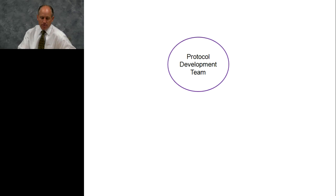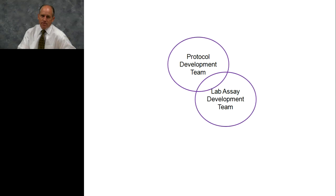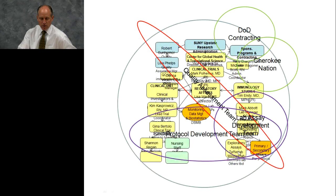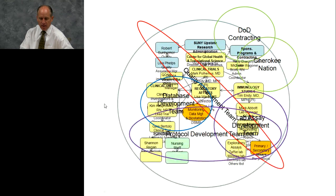Then we started our protocol development team — a team that had our industry sponsor, a group from the DOD, and multiple groups within the upstate family, crossing multiple layers. Then we took a subset of the protocol development team and developed a lab assay development team, folks specifically focused on developing the exploratory assays for this enormous protocol. We layered those folks over a huge portion of our sponsor, the DOD, and our lab. Then we had to start developing the database — a contracted element — so we tucked in a database development team that crossed our sponsor, the DOD, and multiple elements within our clinical trial team and other assets at upstate, including the CRA.